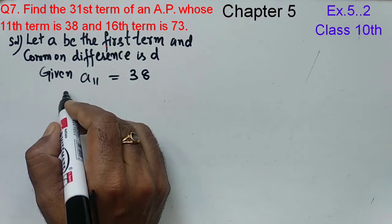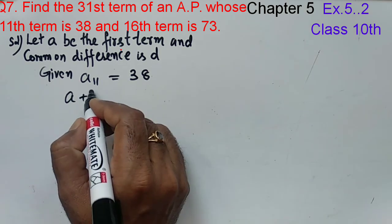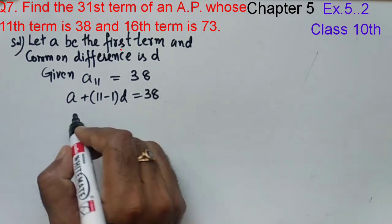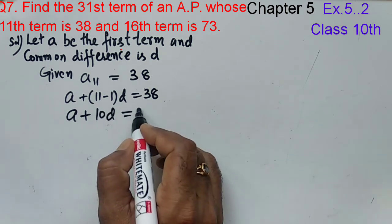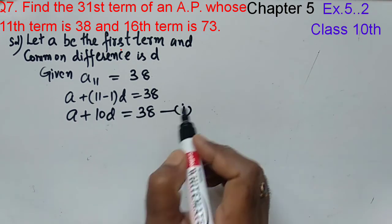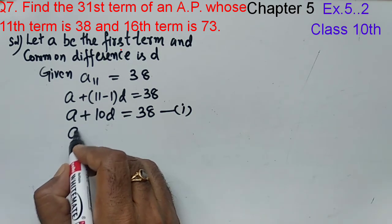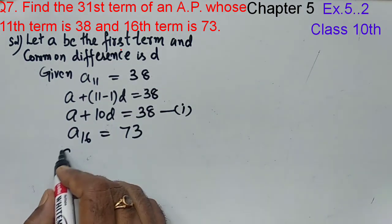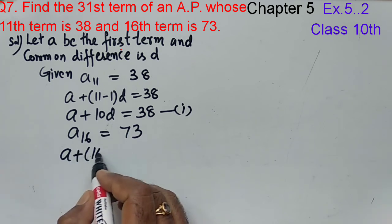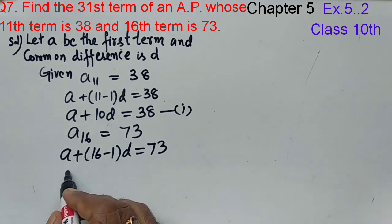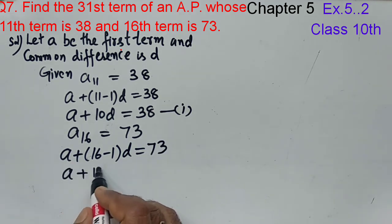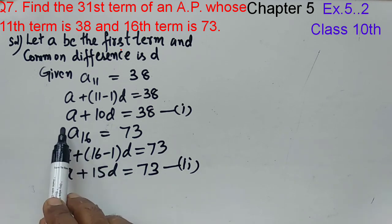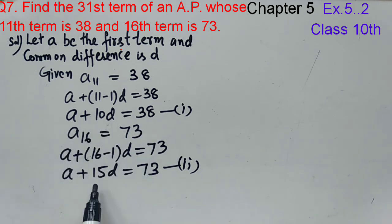What is A11? It can be written as A plus (N minus 1) into D, so A plus (11 minus 1) into D equals 38. This gives us A plus 10D equals 38 — this is equation one. Now A16 is given as 73. A16 can be written as A plus (16 minus 1) into D equals 73, or A plus 15D equals 73. This is equation two.